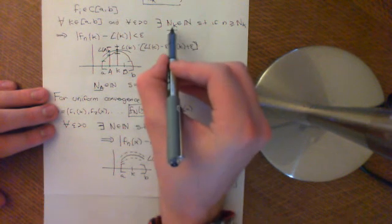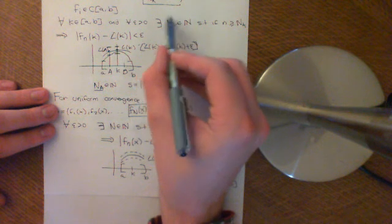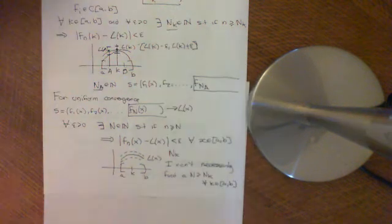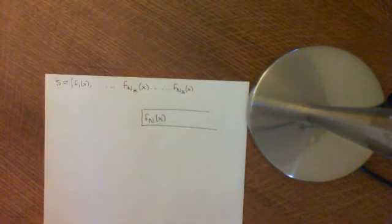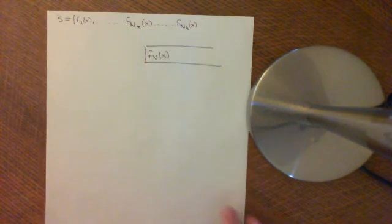It's only true at a specific point K after you get past the point N_K. And that's the problem — that's why pointwise convergence does not necessarily imply uniform convergence.